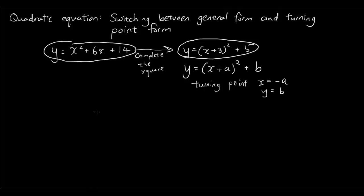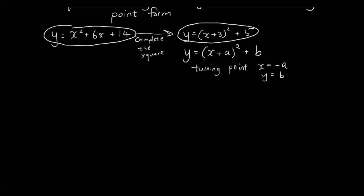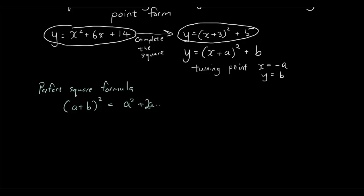I'm going to teach you how to do that using this example. Let's firstly have a look at our perfect square formula, which says that (a plus b) squared is equal to — if you expand it out — a squared plus 2ab plus b squared. If you're not sure how to expand brackets, have a look at the previous expanding tutorial. So we want to somehow manipulate our equation so that we can put these three terms back into something squared plus a constant term.